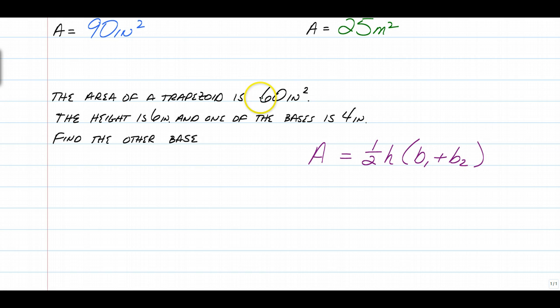Plug in your information. We know that the area of this trapezoid is 60. And it's equal to half of the given height of 6, and one of the bases is 4. We don't know which one it is. It doesn't matter. And now you just solve algebraically.